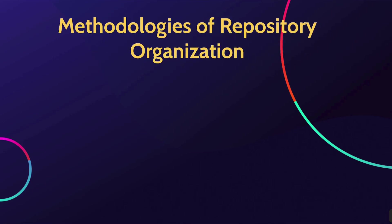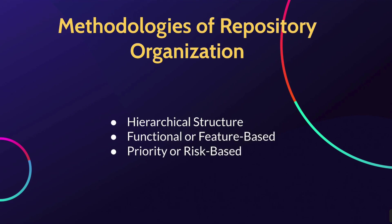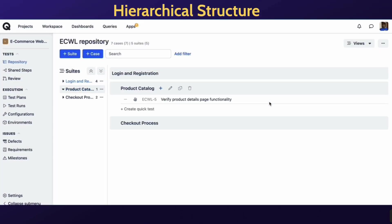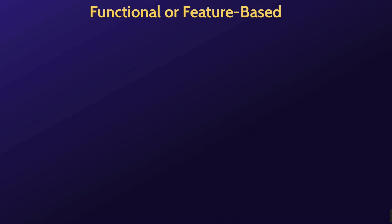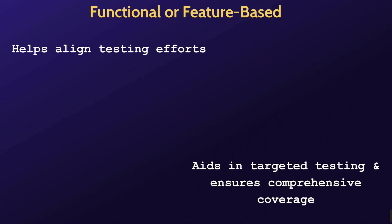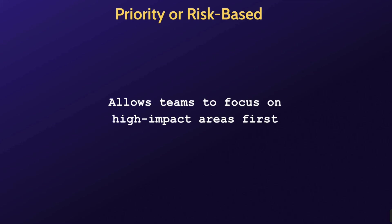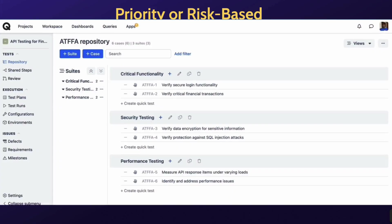Now let's explore the methodologies to bring order to your test case repository. There are three methodologies: hierarchical structure, functional or feature-based, and priority or risk-based. Organizing test cases in a hierarchical structure with suites and subsuites provides a logical and intuitive framework, making it easy to navigate. Grouping test cases based on functionality or features helps align testing efforts with the software's functional aspects, aiding in targeted testing and comprehensive coverage. Prioritizing test cases based on criticality or risk level allows teams to focus on high-impact areas first — especially valuable in scenarios with time constraints.